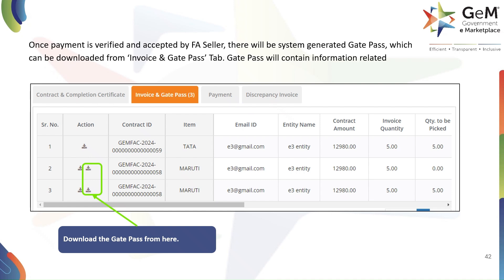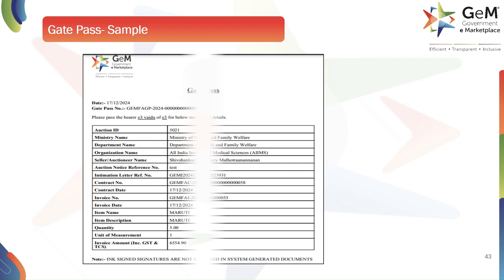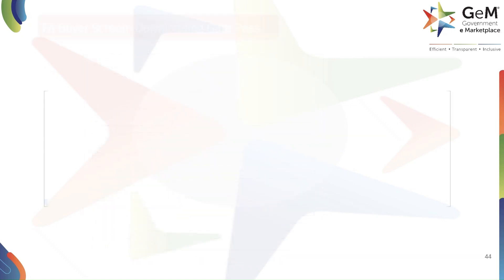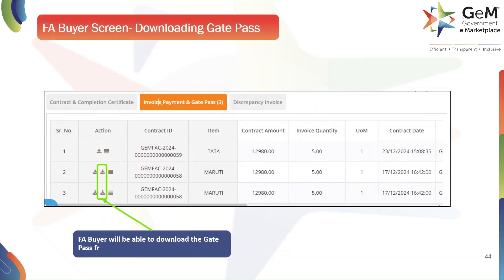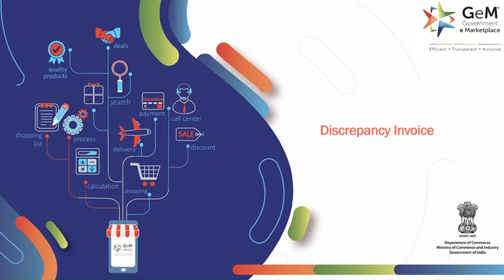The gate pass will contain information related to items of the auction to be lifted. The FA buyer can view and download the gate pass document — here is a sample document for reference. The FA seller can also download a copy of the system-generated gate pass from the Invoice and Gate Pass tab by clicking on the download icon in the action column. The gate pass is an essential document for facilitating the delivery of the goods. Now we will discuss discrepancy invoice.